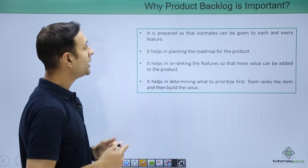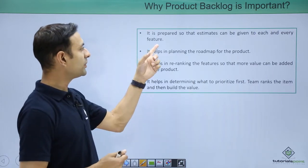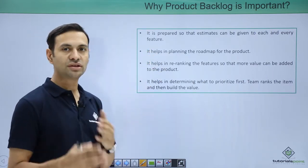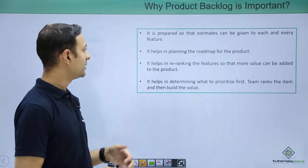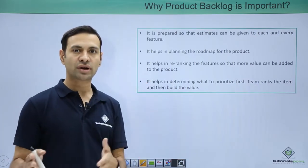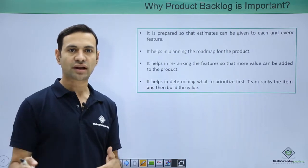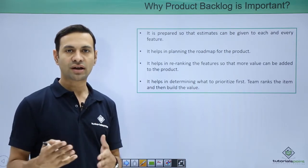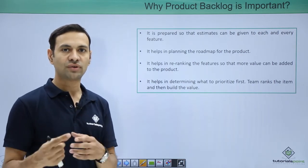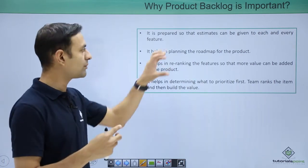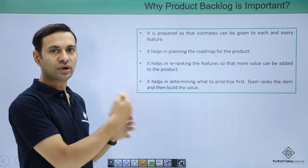Why is product backlog so important in agile? It is prepared so that an estimate can be given to each and every item, each and every feature. It helps in planning the road map of the product — say, one year, two years, three years down the line — what product should be developed, how enhancements are to be done. Each feature or user story is put in the backlog, giving you a set of items to be developed.